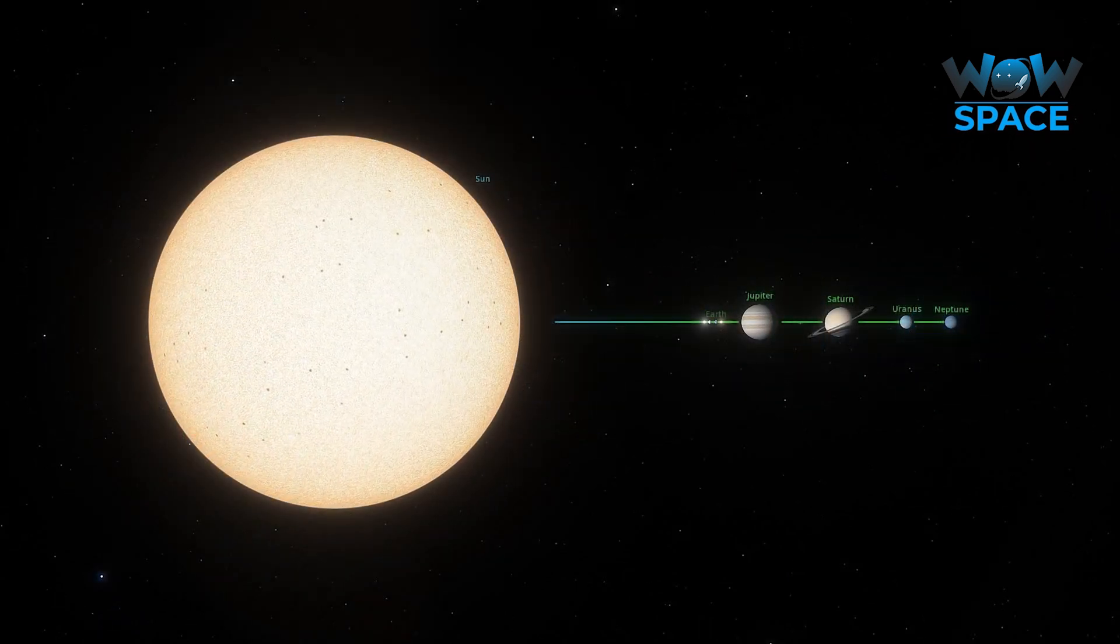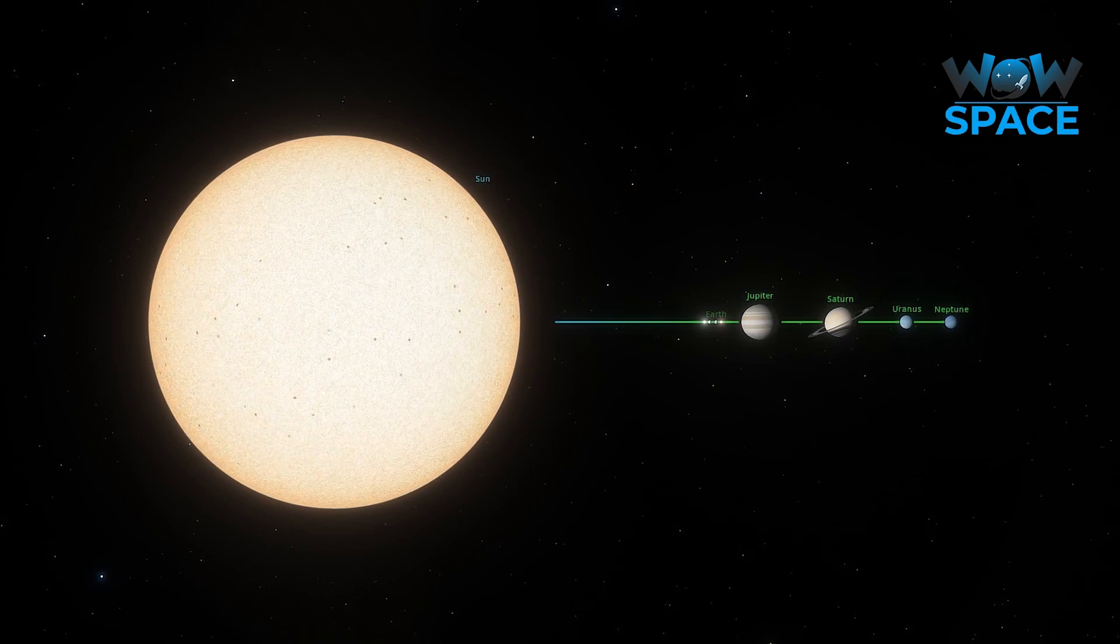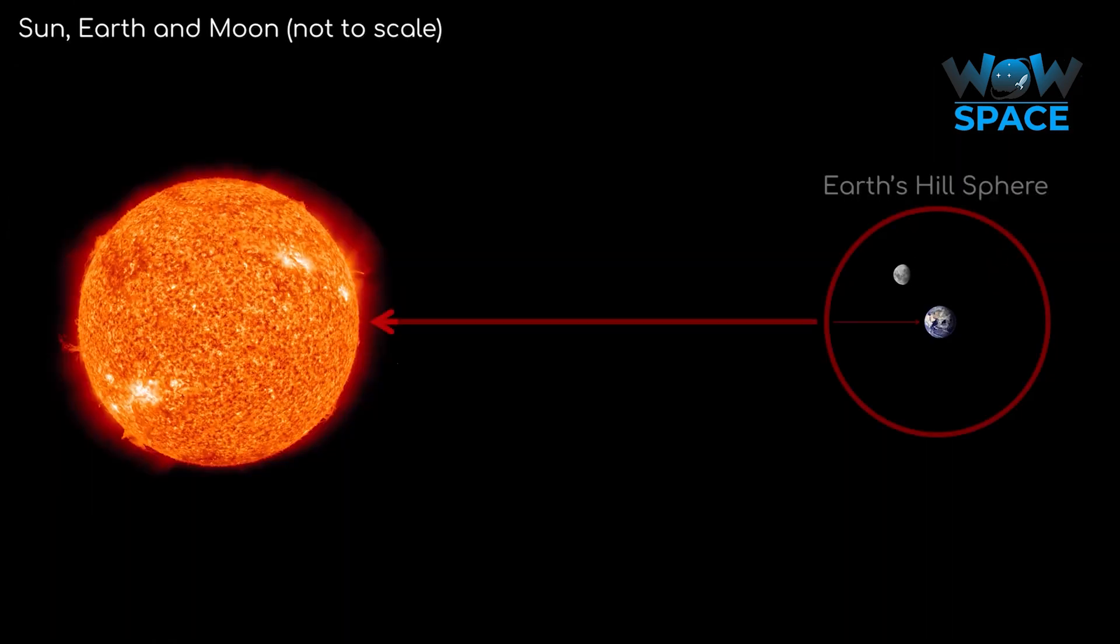Moons in orbit around planets are constantly being tugged and pulled at by the Sun. However, they are within something called the planet's hill sphere. Within the hill sphere of a planet, the planet's gravity has more of an influence on the object than the Sun's gravity. And this influence will be different depending on how close you are to the Sun, because the closer you are, the stronger you are under the influence of the Sun's gravity.